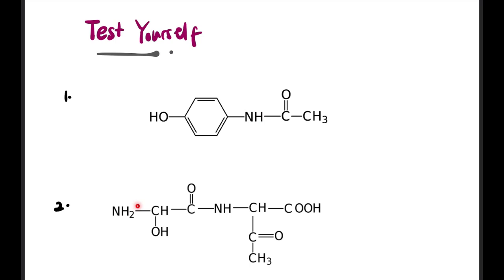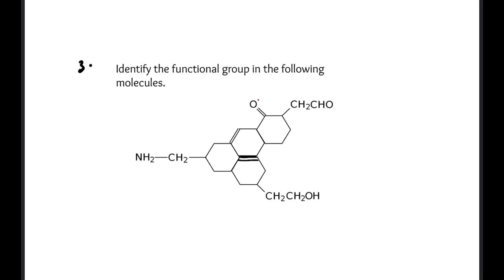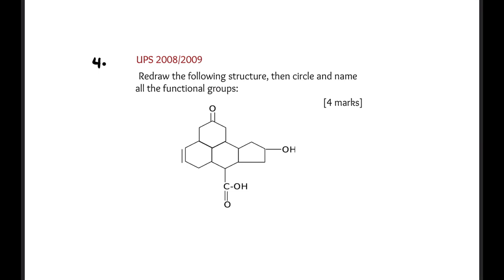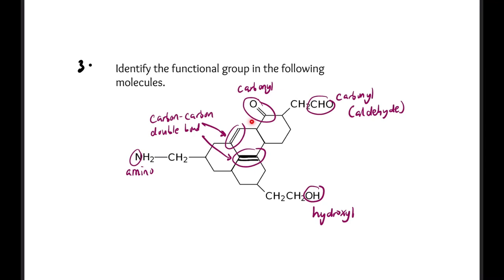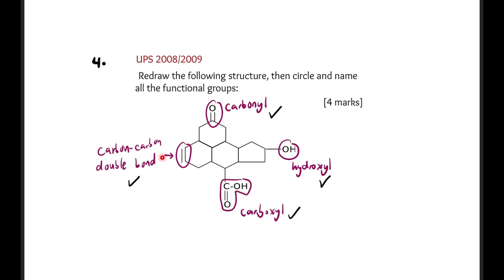Test yourself with the remaining questions — pause the video for the answers. Number three: try it yourself. Number four is a past year question — redraw, circle, and label the functional groups. Note for number three: there are two carbonyls — one CHO (aldehyde) and one ketone carbonyl. Don't forget to like, subscribe, and share the video. Thank you and see you again!